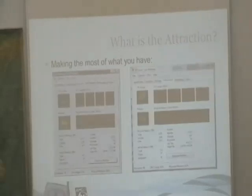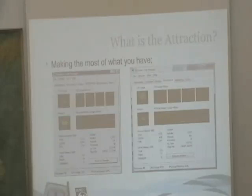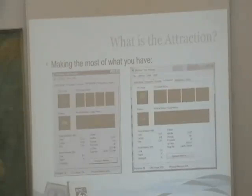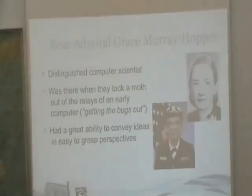So what's the attraction? Part of the attraction is simply to make the best use of what you have. We can see a task manager here. You may be running an application and maxing out one core, and maybe you've got three more cores sitting there idle. Maybe you could drop your time to completion by making better use of the resources you have. So this starts to explore what we can do about that.